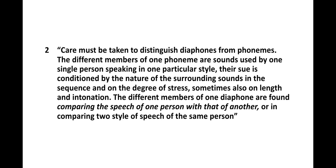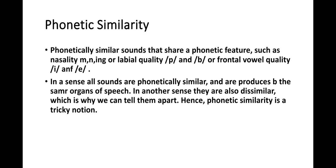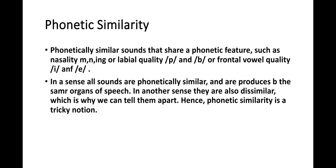Phonetic similarity: sounds that share a phonetic feature — such as nasality (m, n, ng), labial quality (p and b), or frontal vowel quality (i and a) — are phonetically similar. In one sense, all sounds are phonetically similar since they are all produced by the same organs of speech; in another sense they are also dissimilar, which is why we can tell them apart. Hence, phonetic similarity is a tricky notion. That covers today's lesson.